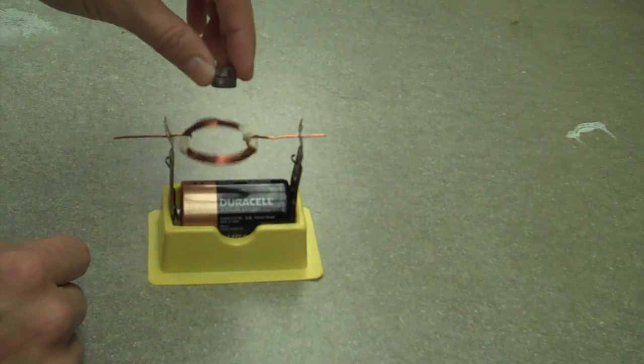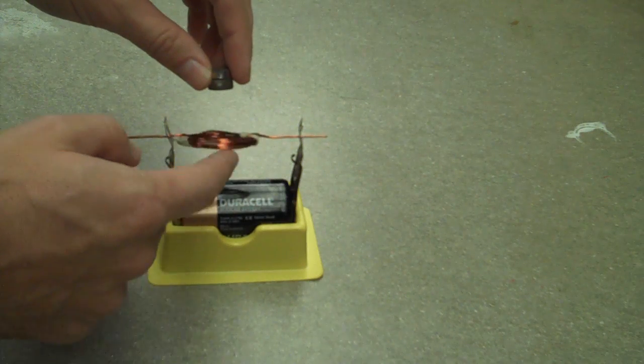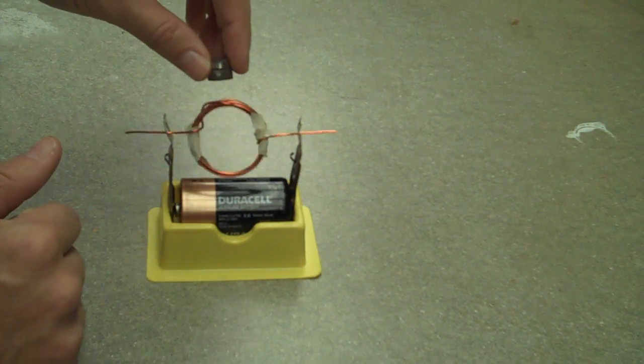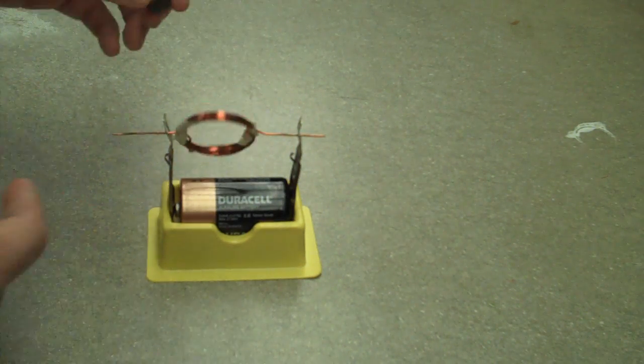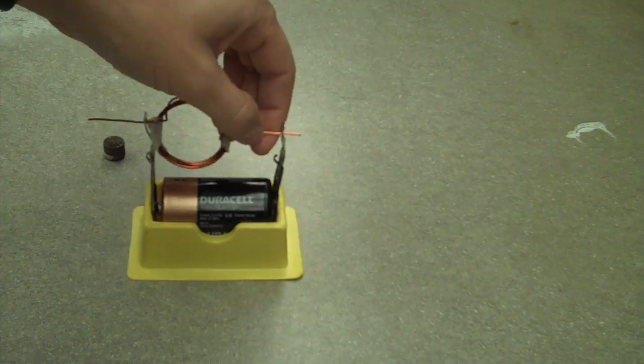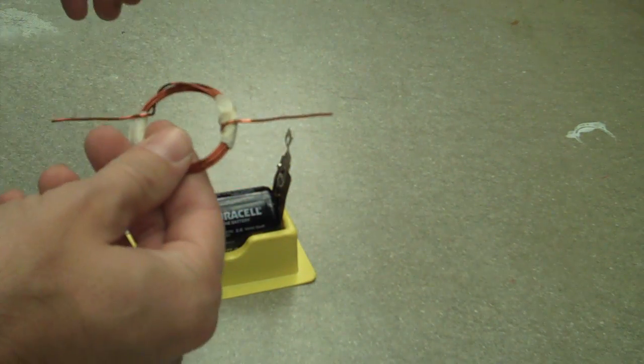Okay, so this is a very simple motor that you can make. But the important thing is to show that a motor, all a motor is, is a wire with current and a magnet.